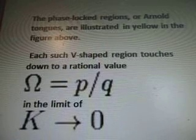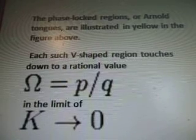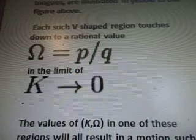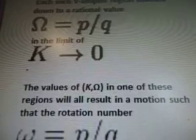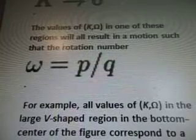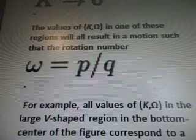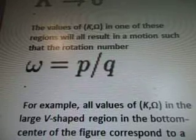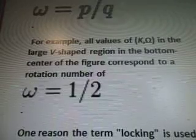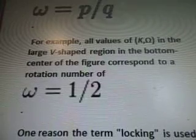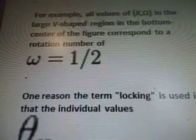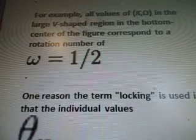The phase-locked regions, or Arnold tongues, are illustrated in yellow in the figure above. Each such V-shaped region touches down to a rational value, and there are the symbols there for the values of K in the horseshoe symbol. All values within one of these regions result in a motion such that the rotation number — shown with the corresponding letters — for example, all values of K in the large V-shaped region in the bottom center of the figure correspond to a rotation number of W equals 1 half.